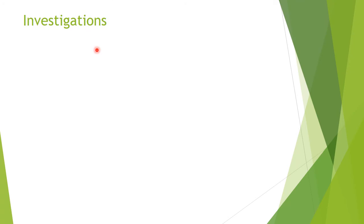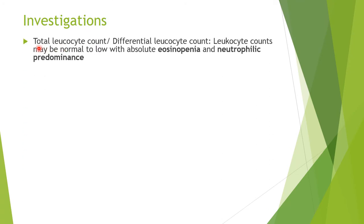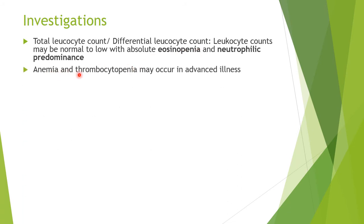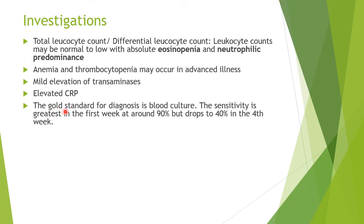In more detail: for blood, we do total leukocyte count and differential leukocyte count, in which we will see normal to low leukocyte count with absolute eosinopenia — this is one of the conditions where eosinophils decrease — and neutrophilic predominance, since this is a bacterial condition. We may also see anemia and thrombocytopenia in advanced illness, mild elevation of hepatic transaminases (ALT), and elevated CRP. The gold standard for diagnosis of typhoid is blood culture, with sensitivity greatest in the first week at around 90%, dropping to 40% by the fourth week.